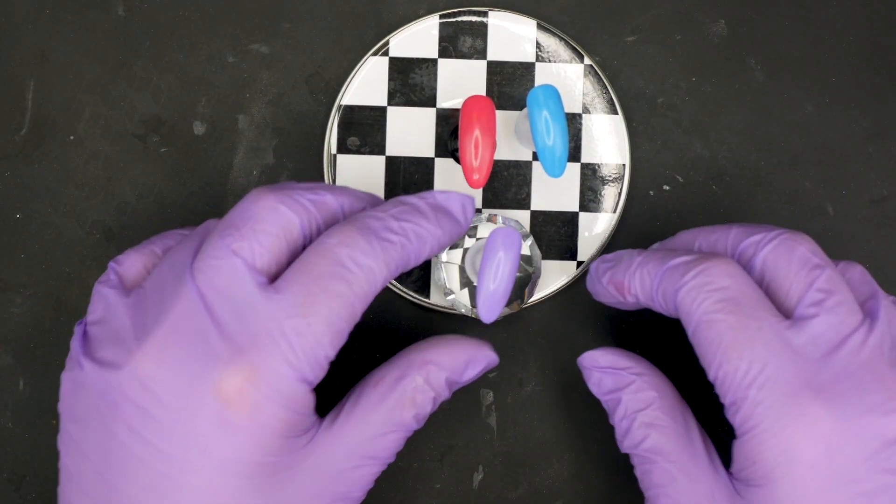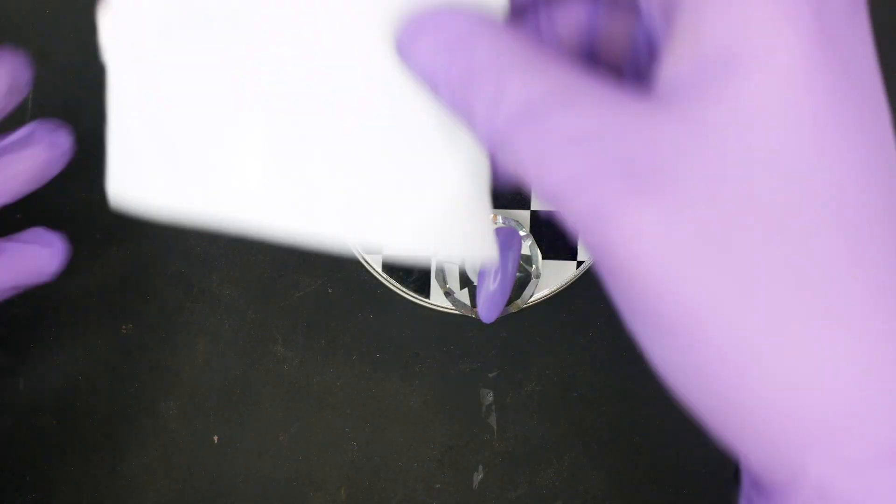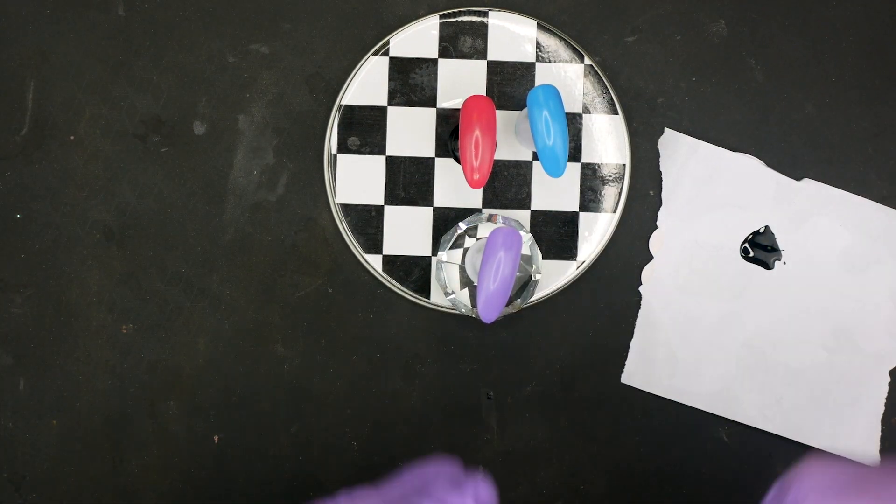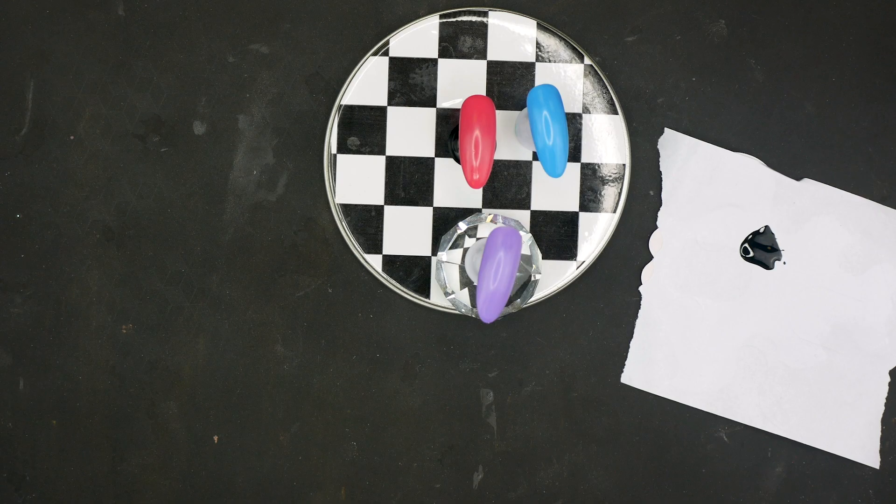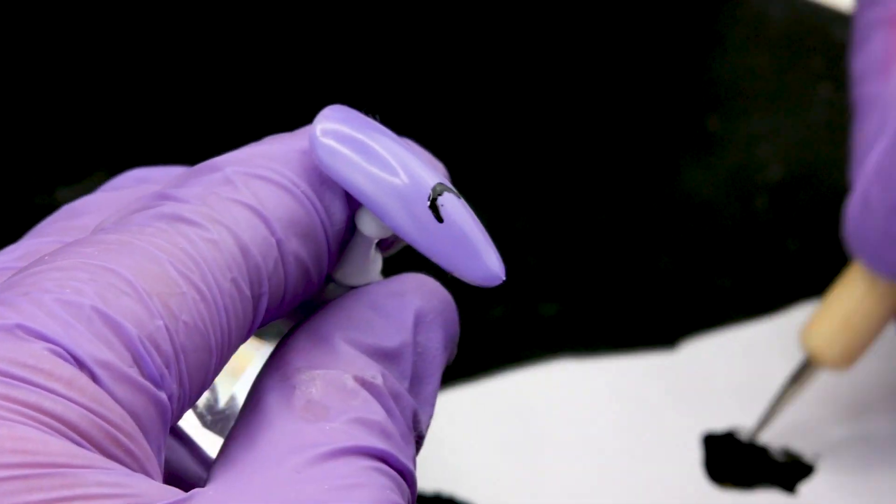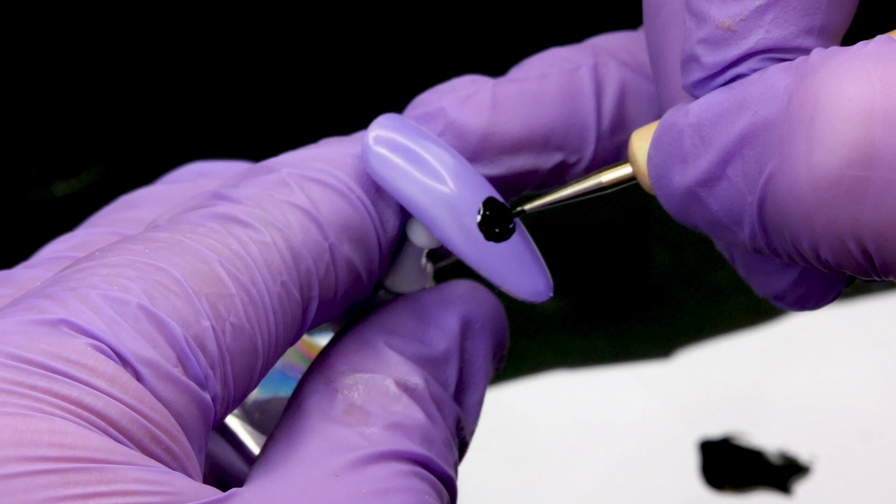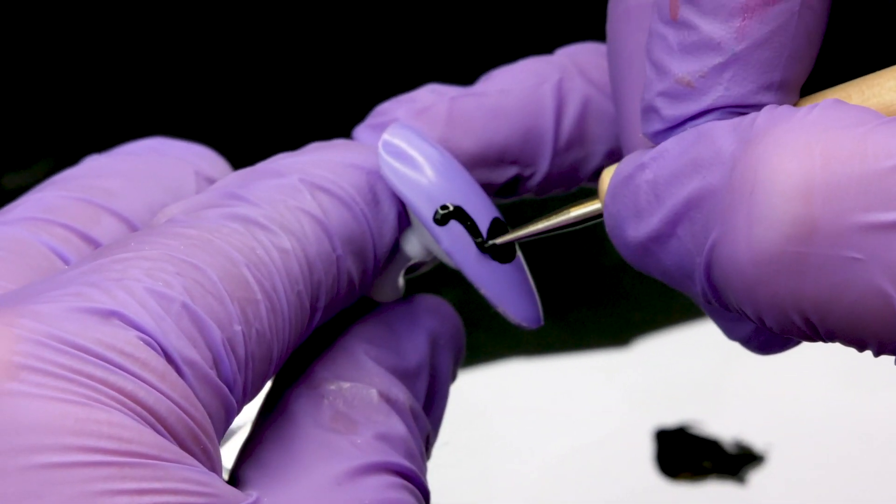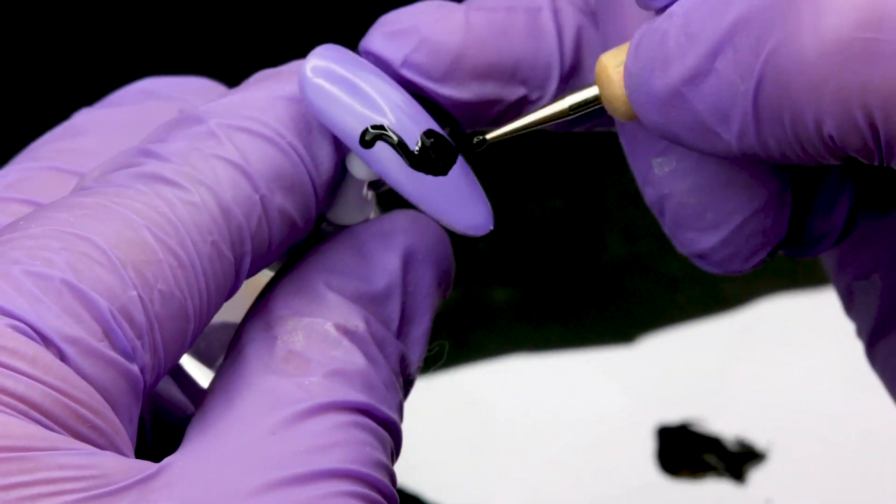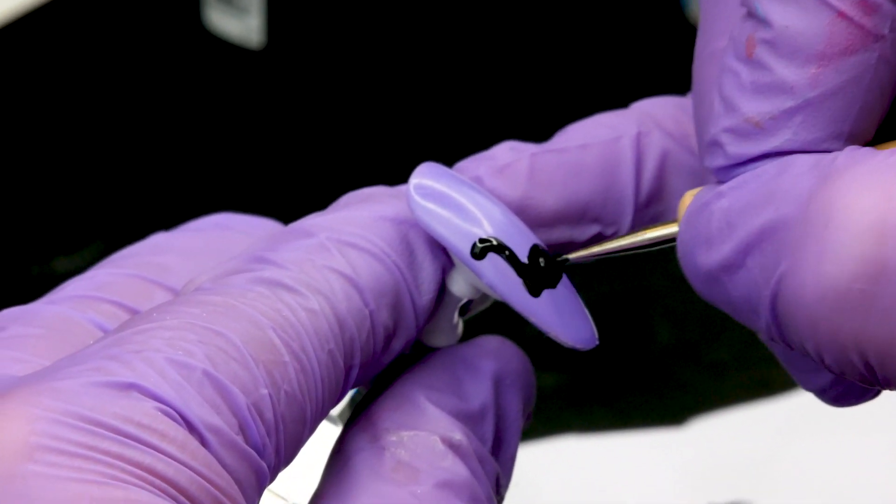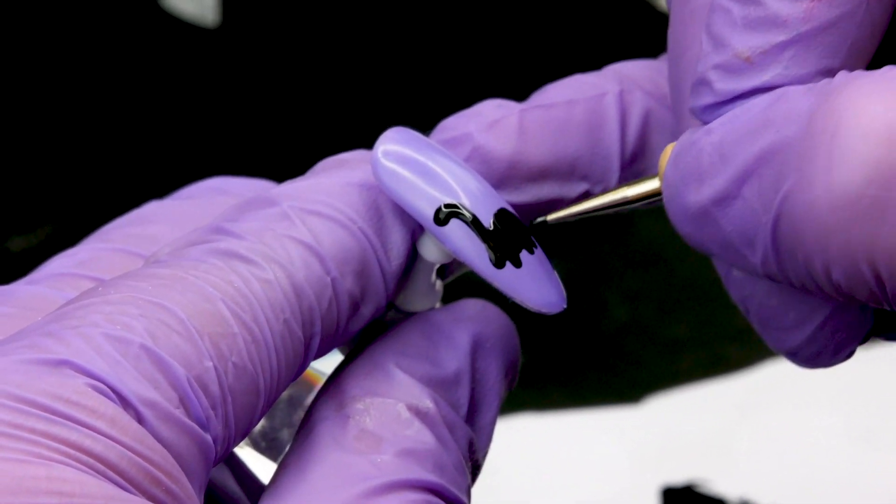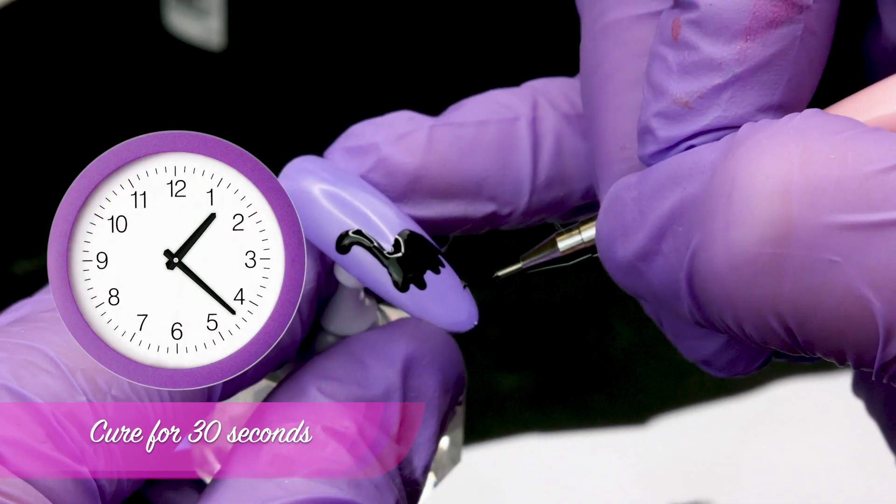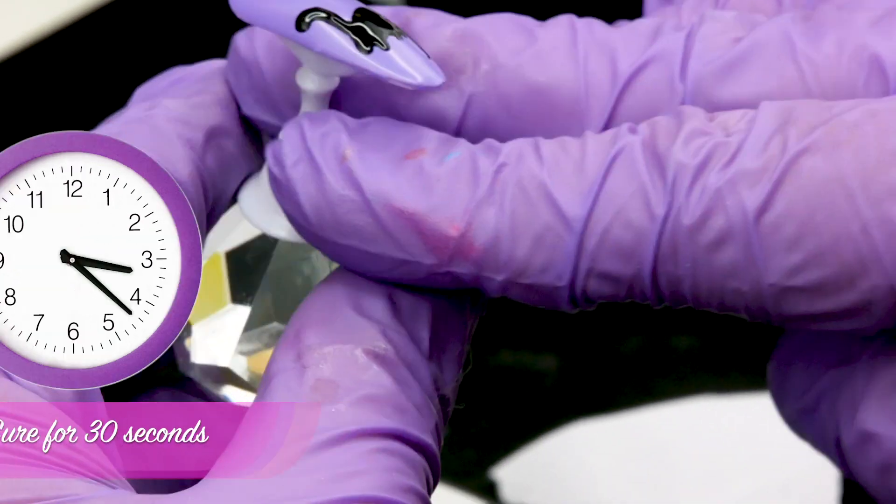So we'll take our first one. What we'll do, again on a form, we'll put some serious black right on there and we're going to start with a dotting tool. Start etching this out. Now I'm going in with our brush, just eating those lines up a bit. Go in the lamp for 30 seconds.